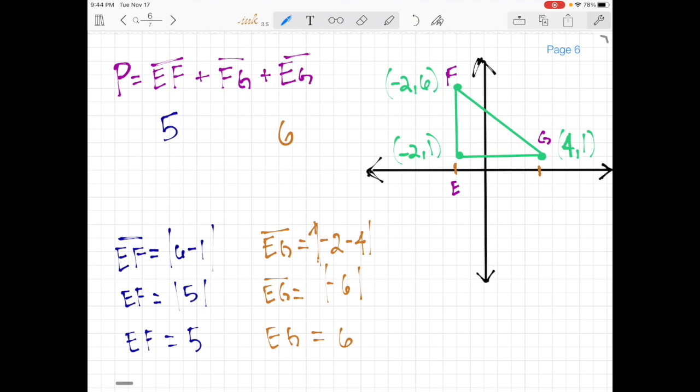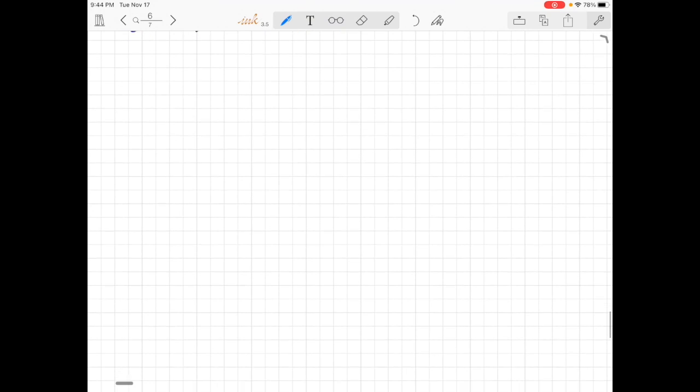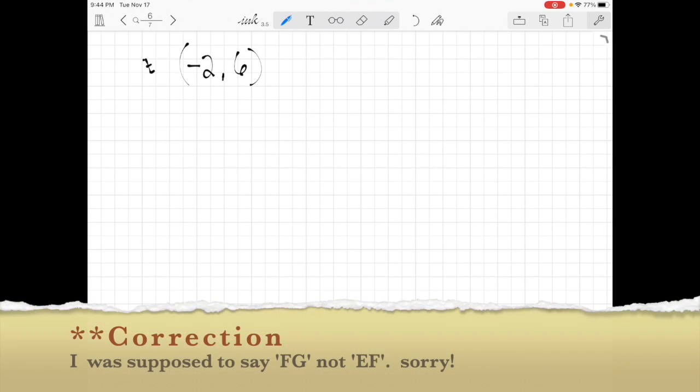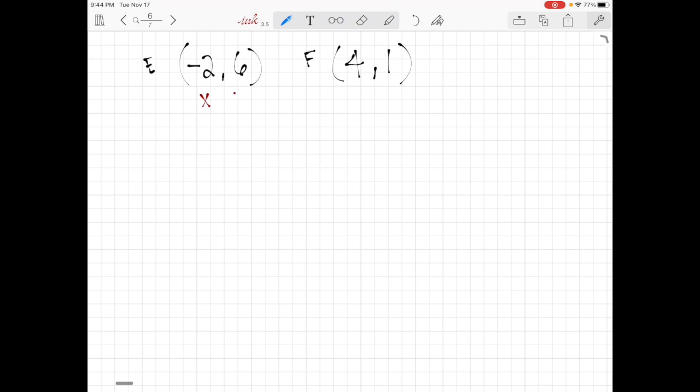So now I got this other one, the hypotenuse here, FG, and I can't just count that one. This one, I'm going to have to do the distance formula. So my two points, that's at negative two, six, and four, one. So I'm going to say negative two, six. That I think was E. And then F was at four, one. And I'm going to label them X and Y, X1, Y1, X2, Y2. I'm going to have to do the distance formula.